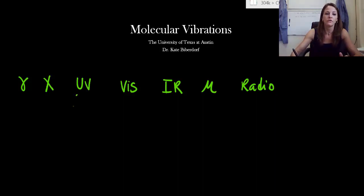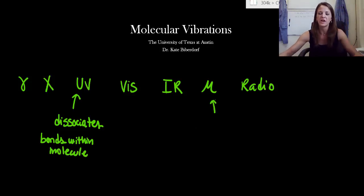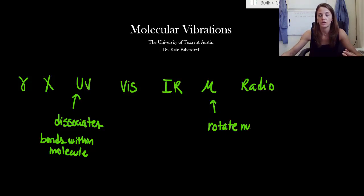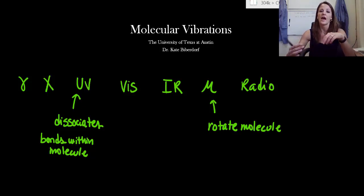We've talked about UV radiation before, and we know that when UV radiation hits a molecule, it dissociates the bonds within the molecule. We've also kind of discussed microwaves — essentially what microwaves do is when they hit a molecule, they rotate the molecule. So in our food, when we put food in a microwave, the microwaves hit our food, which causes our water molecules to spin or rotate, and that rotation causes friction within the food, and that's what warms our food.